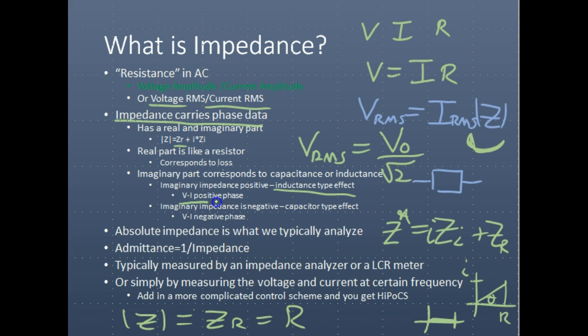For a V I positive phase, that means the current is ahead of the voltage. This would be the characteristic of an inductor. If the voltage is in front of the current, this is the behavior of a capacitor. So depending on our real impedance and our imaginary impedance...